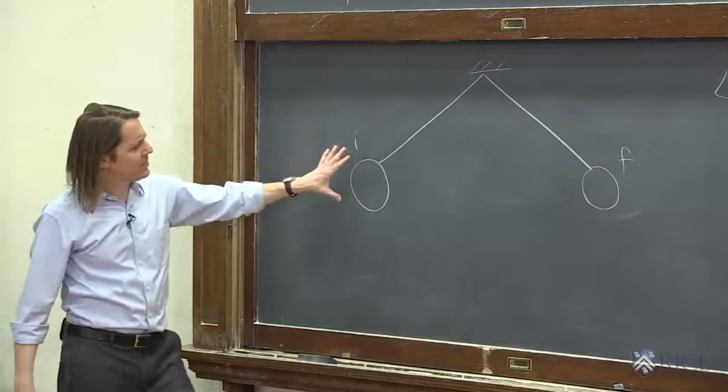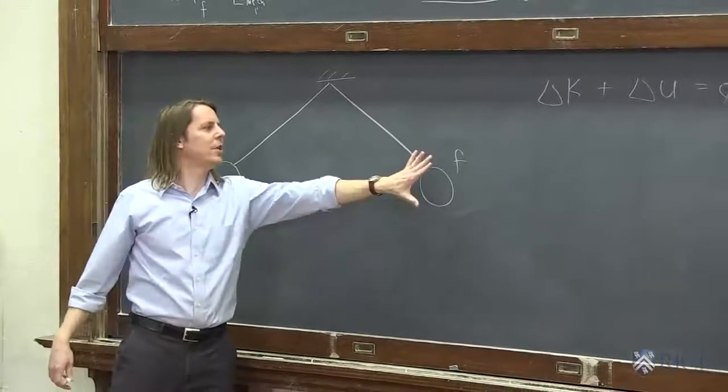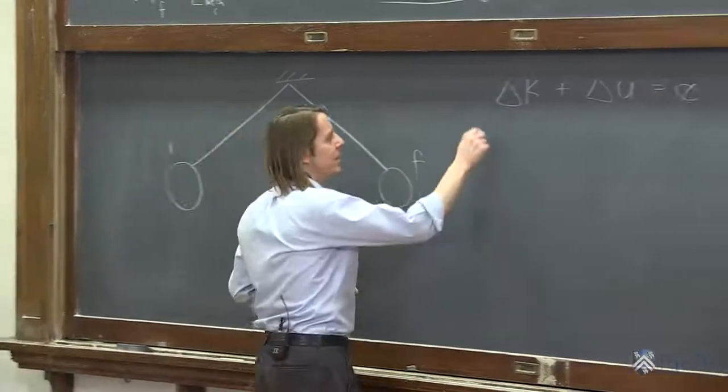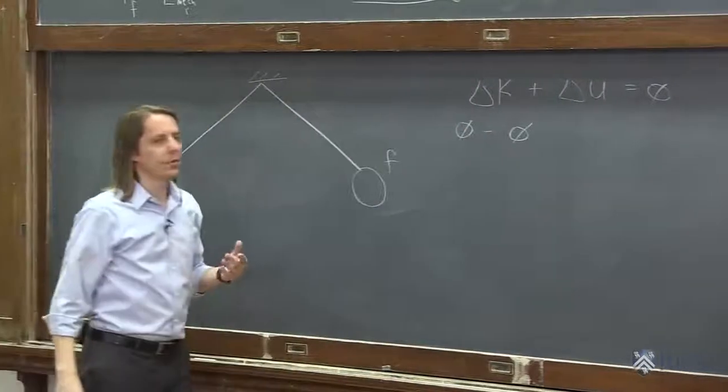And we're thinking this is the initial and the final, and this is the point where it stops. Swings up, stops to go the other way. So at both positions, it's at rest. So the final kinetic energy is 0, and the initial kinetic energy is 0, because the velocity is 0.